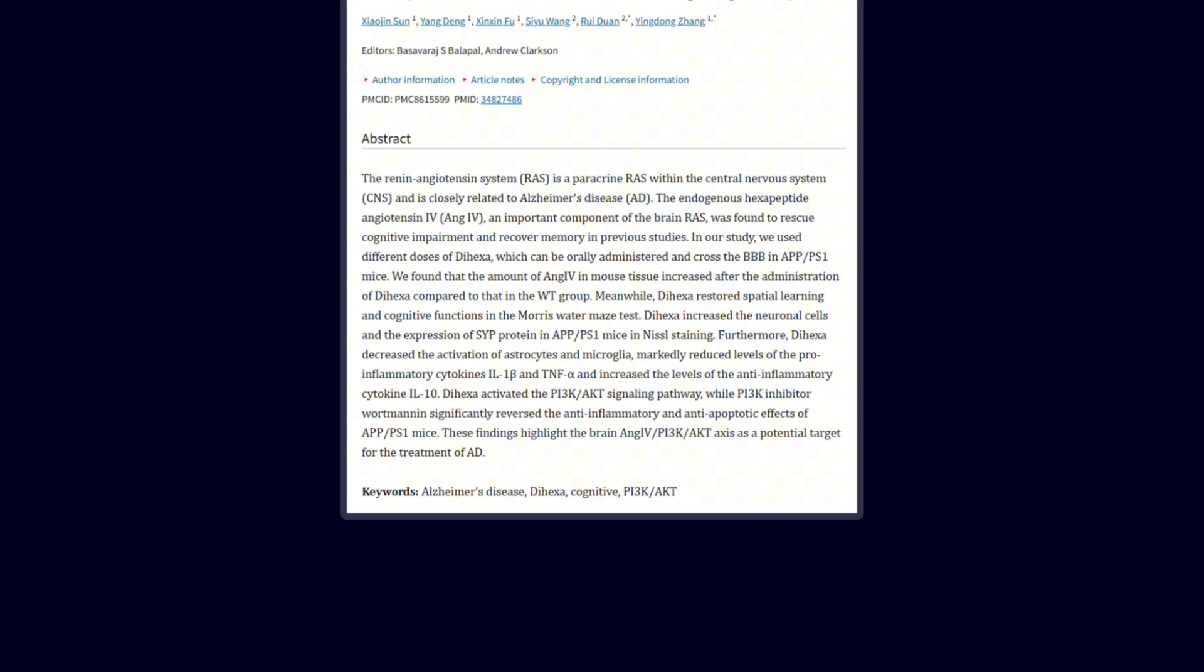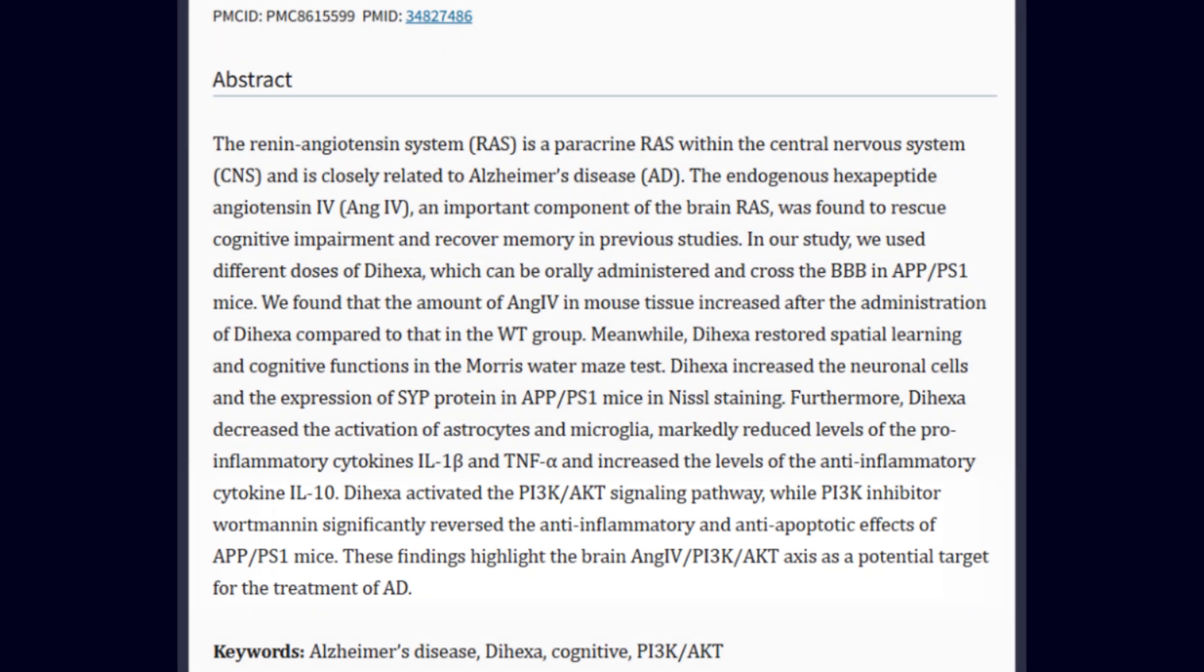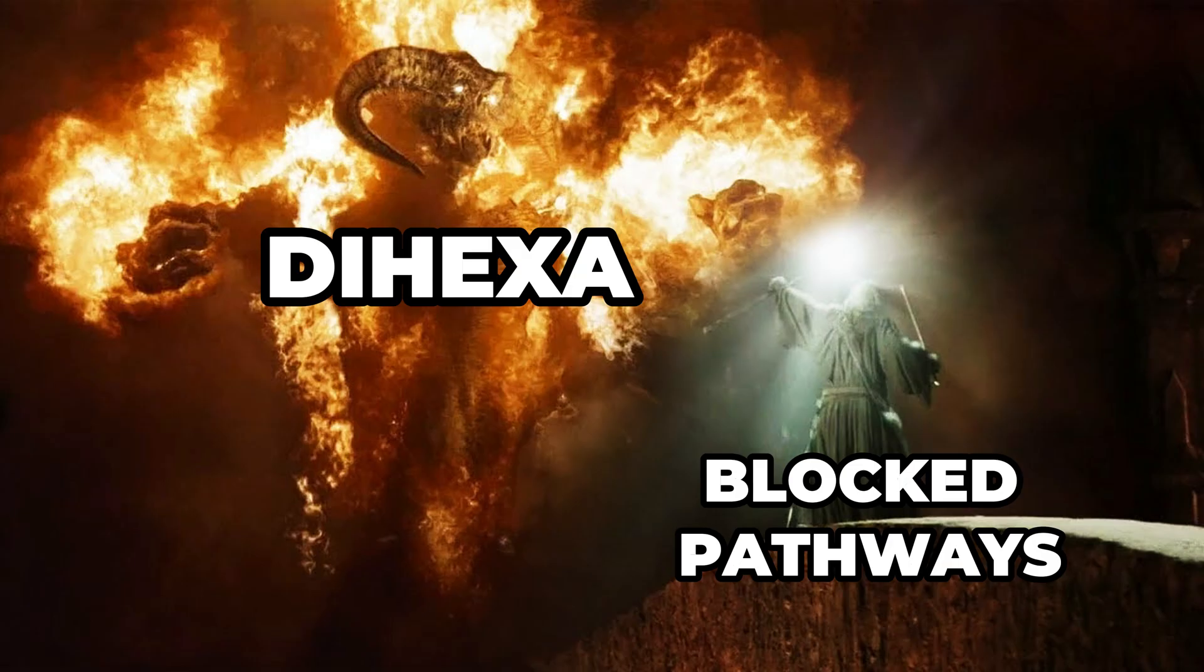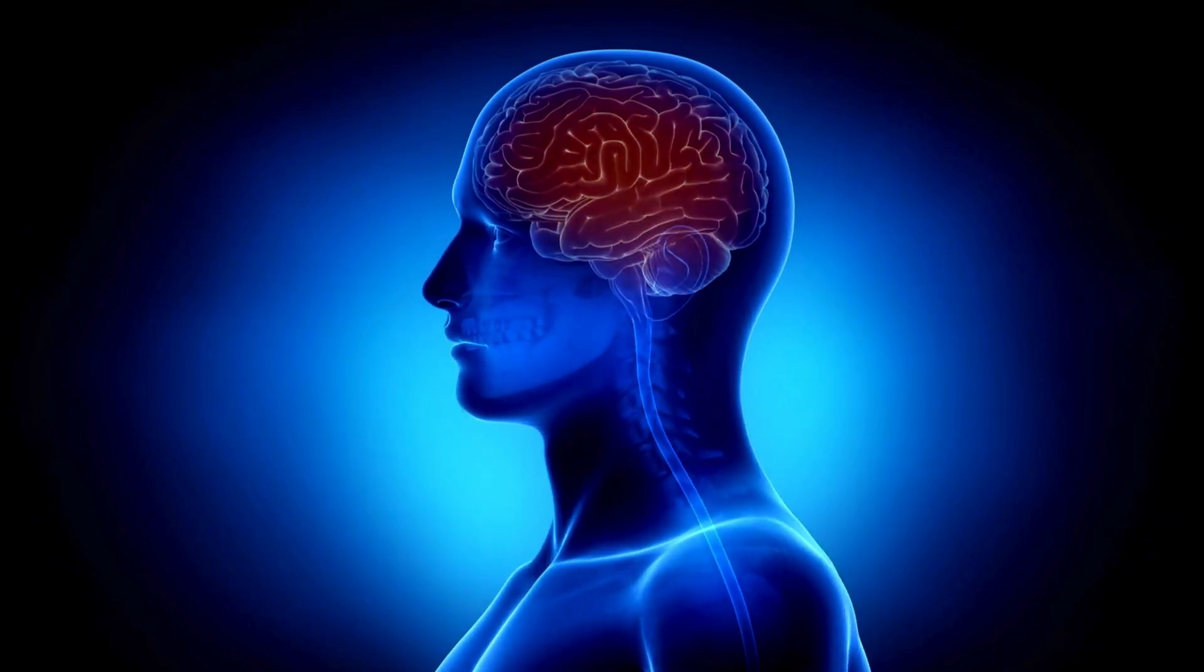According to studies on mice, Dihexa works by activating key signaling pathways in the brain that reduce inflammation and protect nerve cells from damage. When these pathways were blocked, Dihexa lost its effectiveness, highlighting its potential to support brain health.